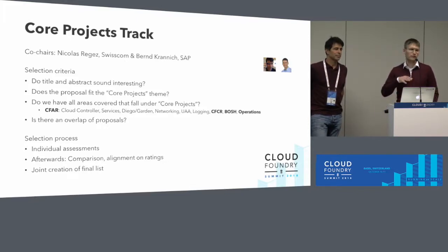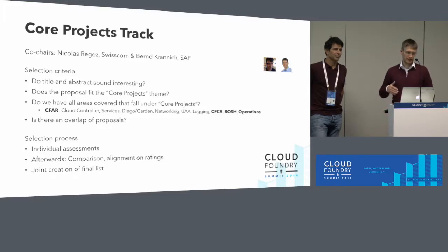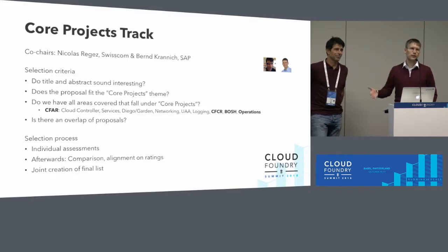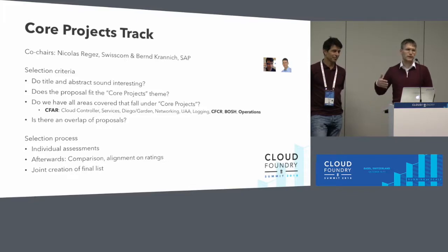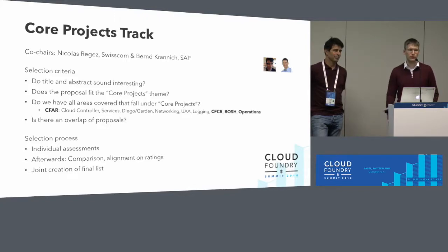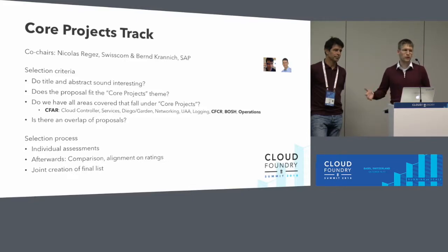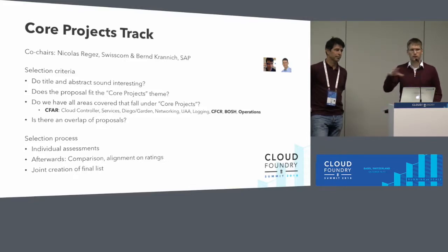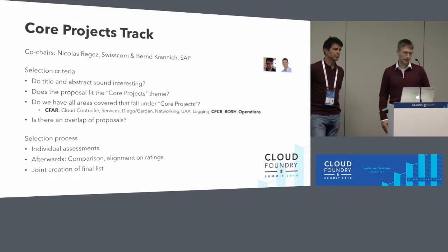You have Cloud Foundry application runtime — the thing that was formerly called Cloud Foundry. Then you have Cloud Foundry container runtime, so Kubo, the Bosh release that takes Kubernetes and makes that deployable via Bosh. You have Bosh itself as the lifecycle management tool powering many of the projects inside Cloud Foundry. And we also have talks around operations topics, so it's not only about those core technical things, but also how to run that stuff.